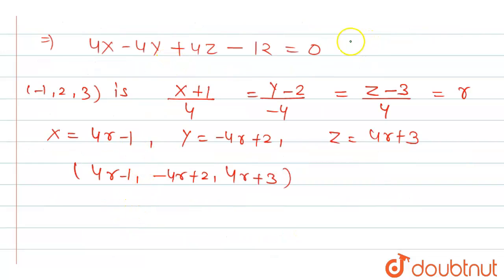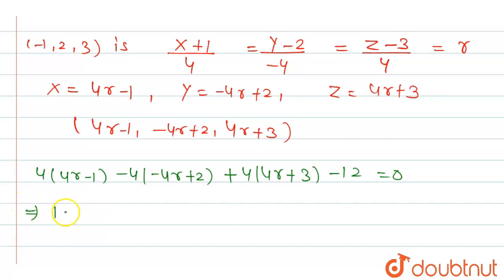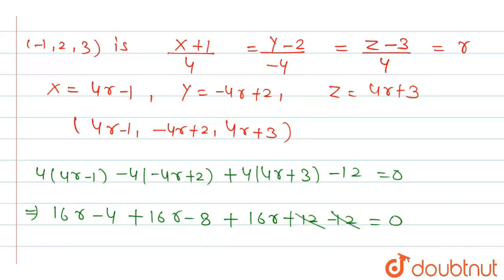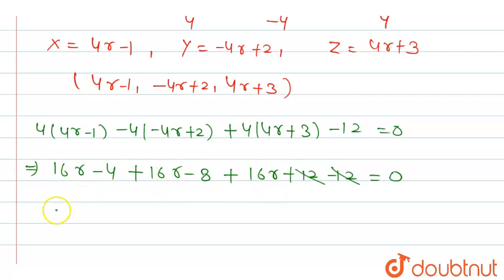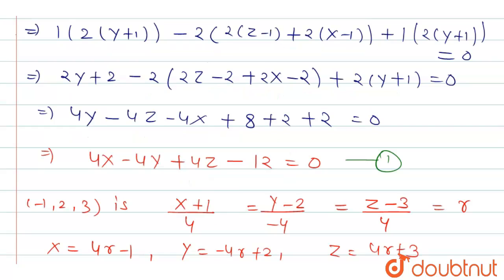Since this point also lies on the plane, substituting into the plane equation: 4(4r - 1) - 4(-4r + 2) + 4(4r + 3) - 12 = 0. Expanding: 16r - 4 + 16r - 8 + 16r + 12 - 12 = 0. The +12 and -12 cancel: 48r - 12 = 0, giving r = 12/48 = 1/4.